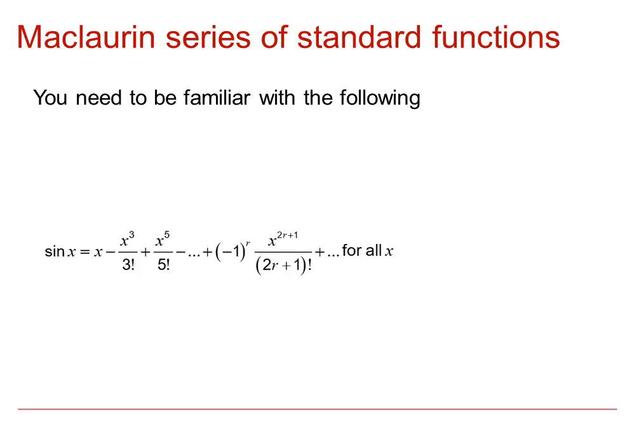And sin x equals x minus x cubed over 3 factorial plus x to the 5 over 5 factorial with a general term of minus 1 to the r over (2r plus 1) factorial, which is valid for all real values of x.